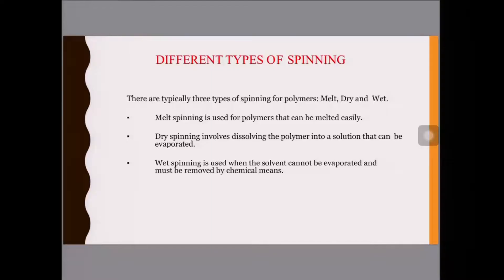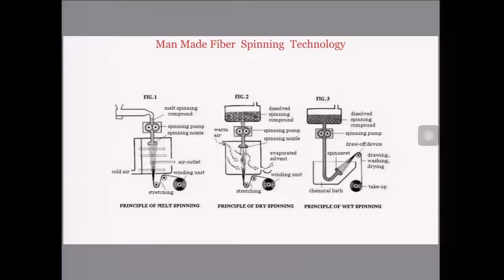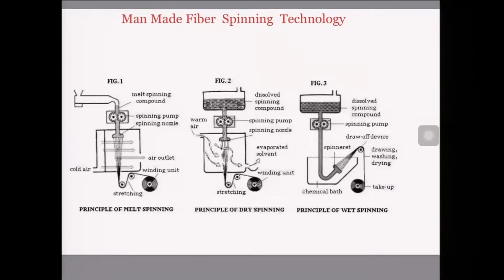There are three different types of spinning systems. The first is melt spinning, specifically used for polymers that have a melting point and can be melted easily. Solution spinning covers two categories: dry spinning and wet spinning. Dry spinning involves dissolving the polymer in a solvent that can be evaporated, while in wet spinning, the polymer is not evaporated but is solidified by certain chemical means.